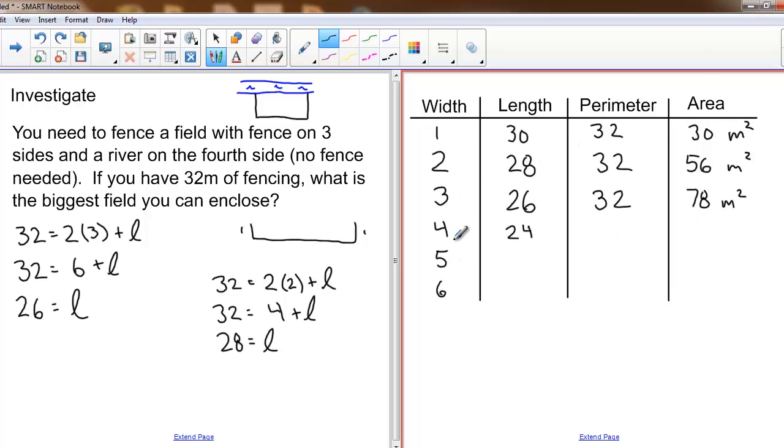Width of 5 and a length of 22 gives me an area of 110. Why don't you fill in the table the rest of the way and let's see if we can figure out what our maximum area is.